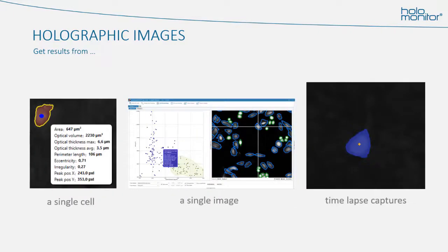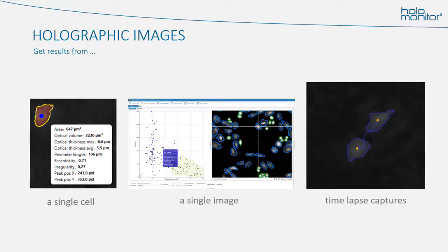Once the cells have been identified, we can pull a lot of hard data from the images. Even the image of a single cell gives us more than 30 morphological parameters. An image showing many cells will give data both on the individual cells and on the cell population. If images are captured showing the same position every few minutes, the results can be presented as a time-lapse movie showing what happens to the cells — in this case, a cell division. Data can be provided both for the individual cells and for cell populations.